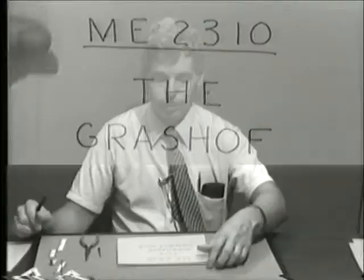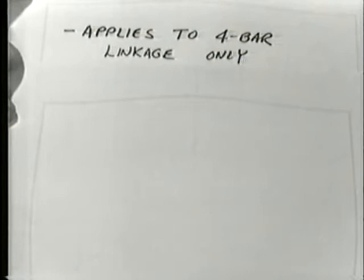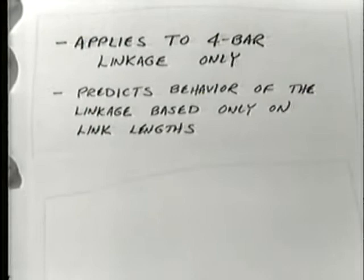I'd like to talk today about the Grashoff condition, which will tell you a great deal about the behavior of a four-bar linkage. It applies only to the four-bar linkage, not to linkages with more than four bars. It will predict the behavior of the linkage based only on the lengths of the links — no other constraints.